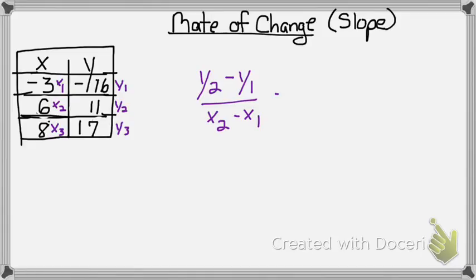Okay, so then I'm just going to plug it in the formula. My y2 is 11, so I have 11 minus negative 16, since that's my y1, divided by 6 is my x2 minus negative 3, since that's my x1.